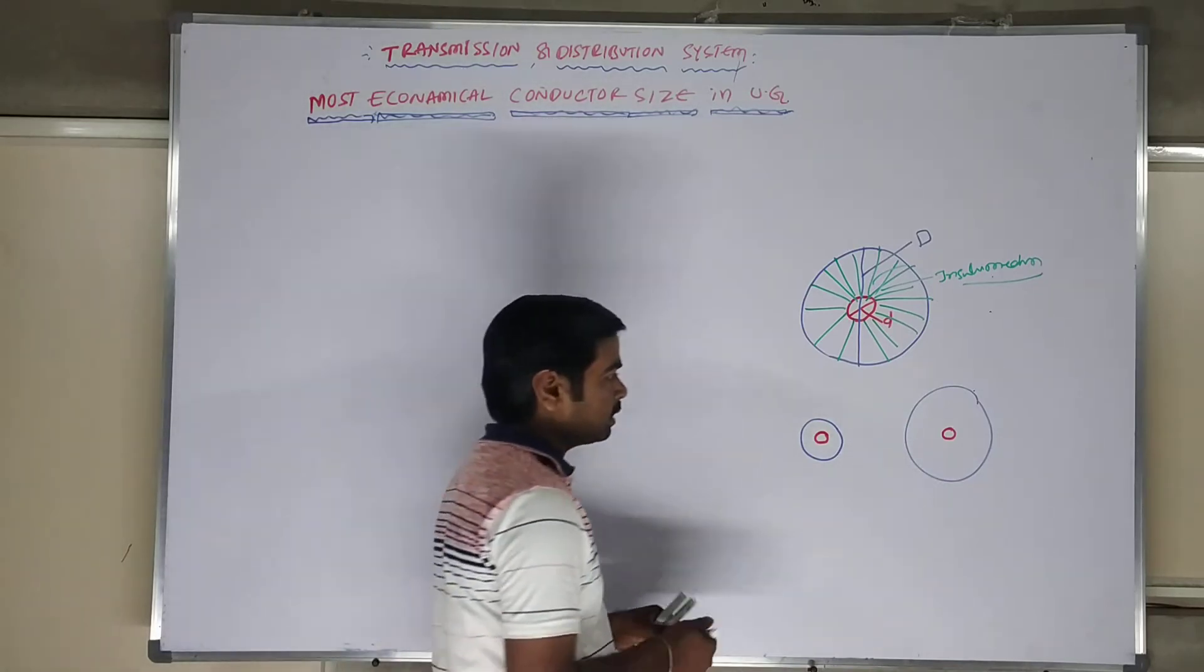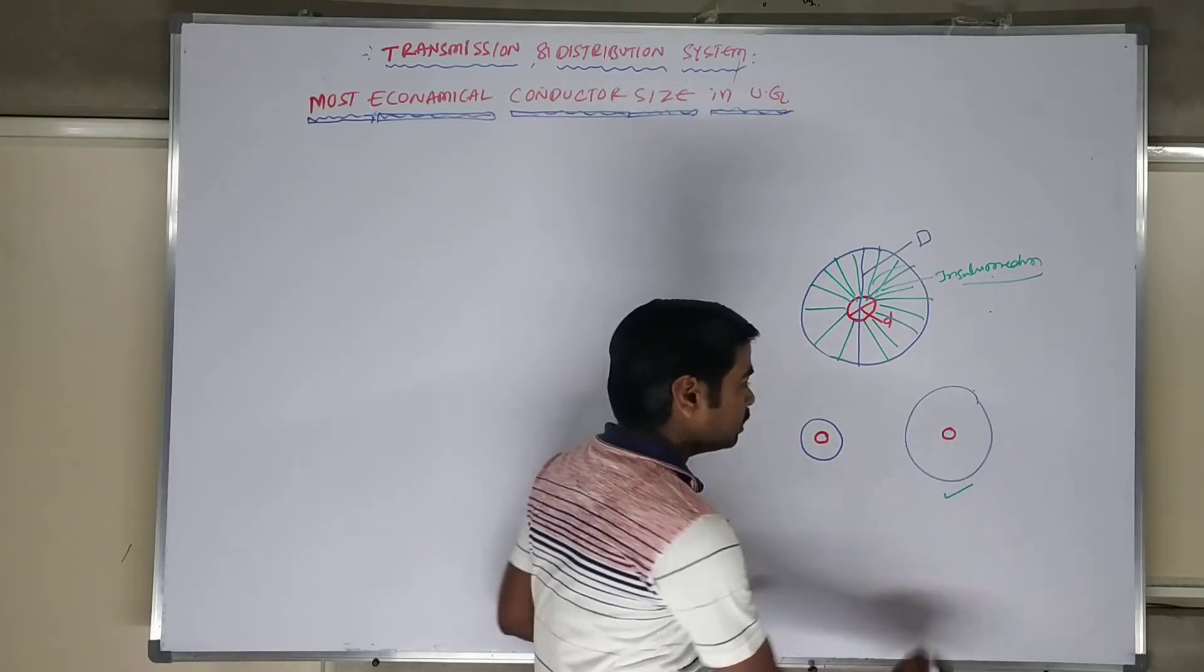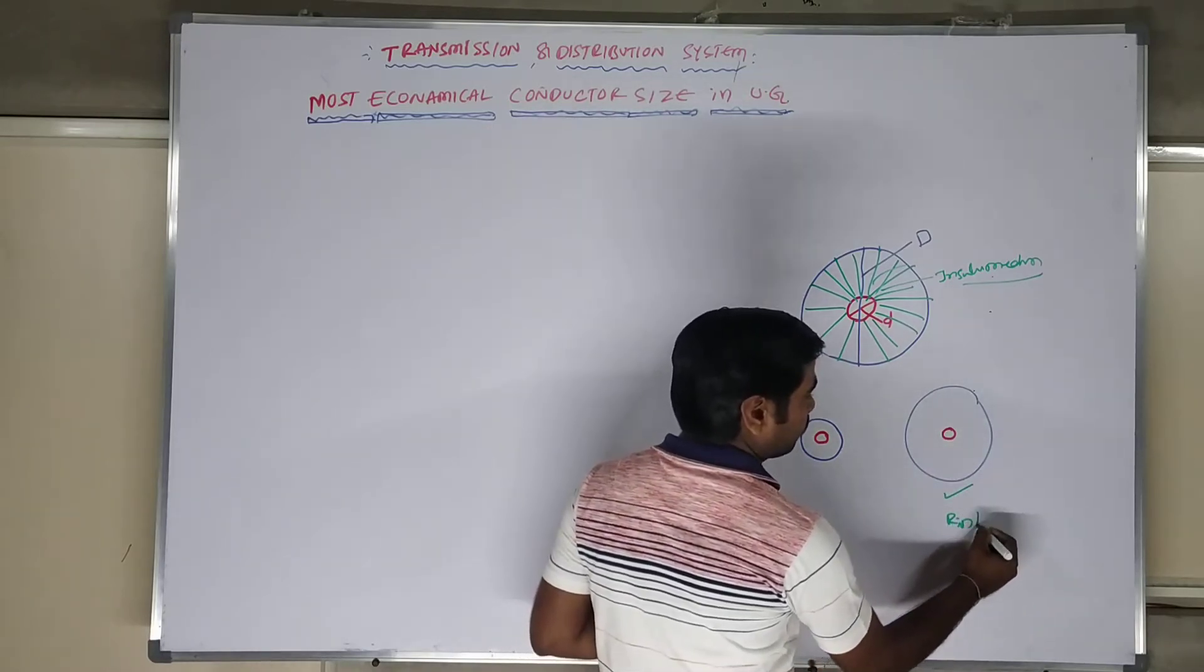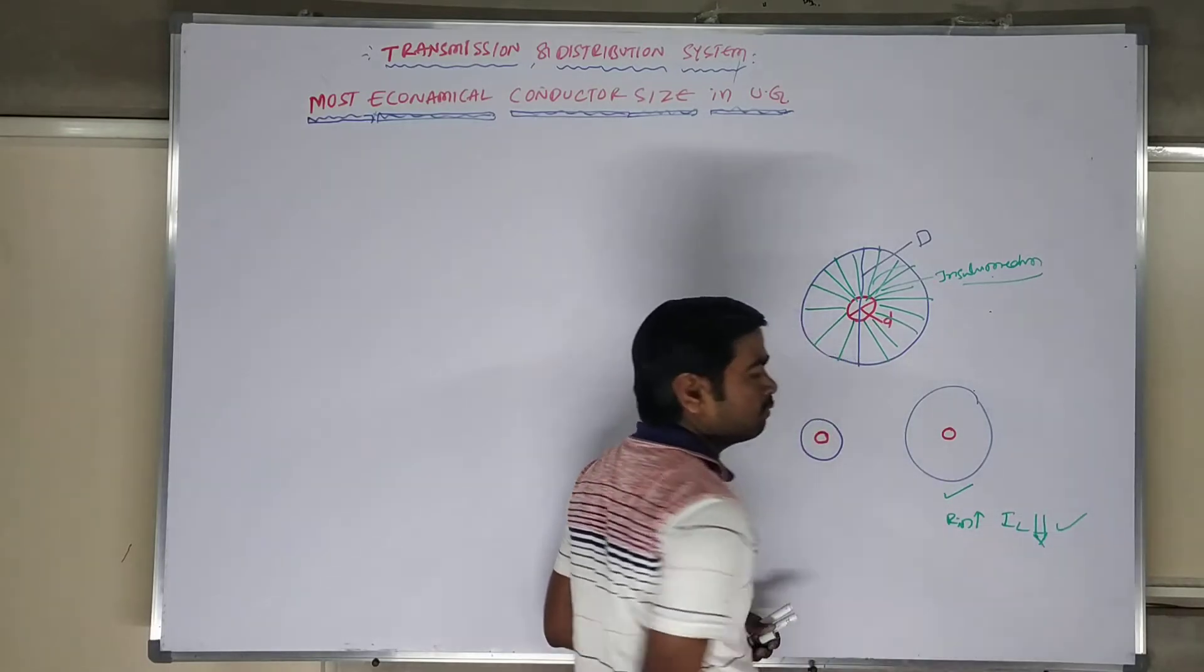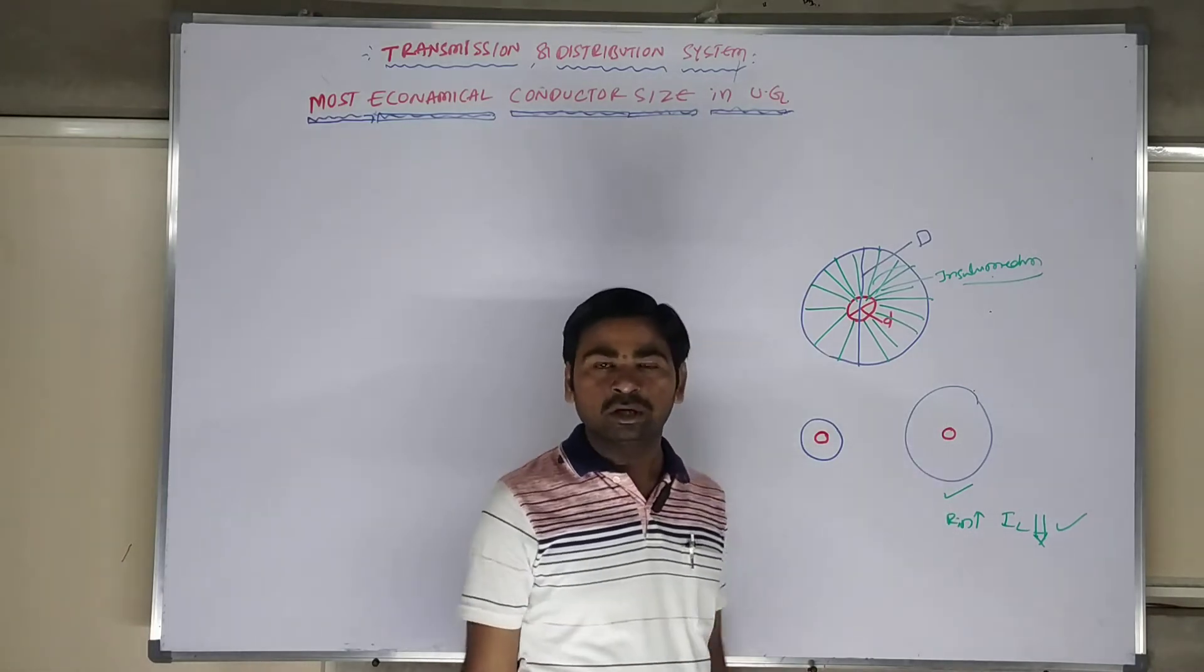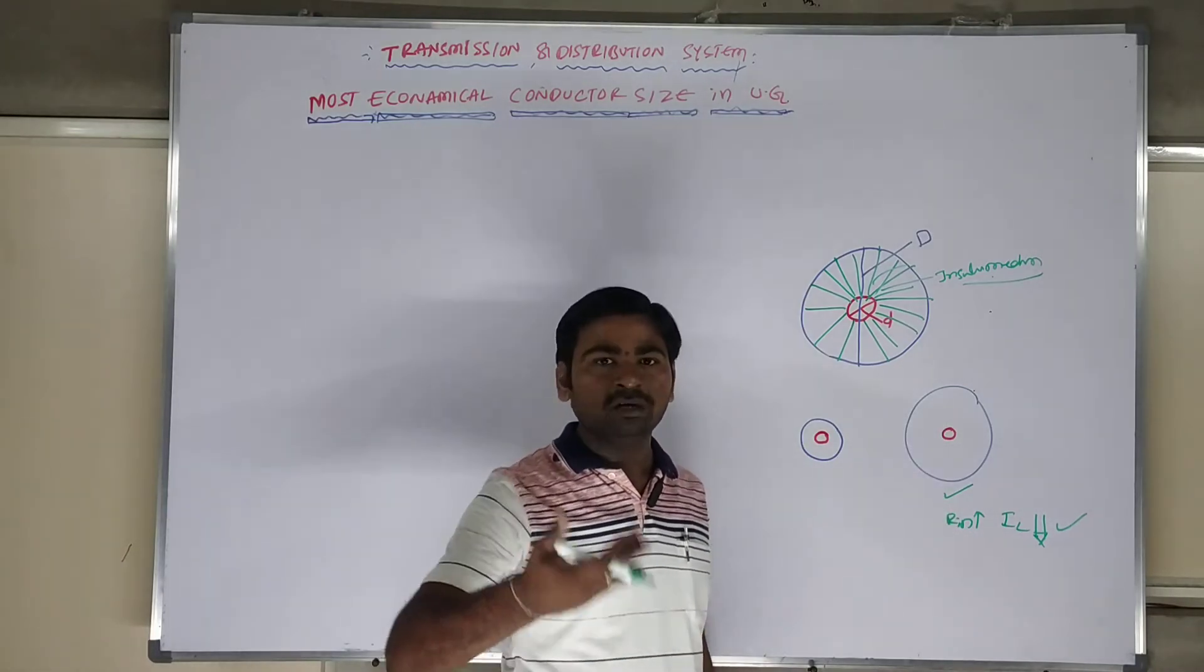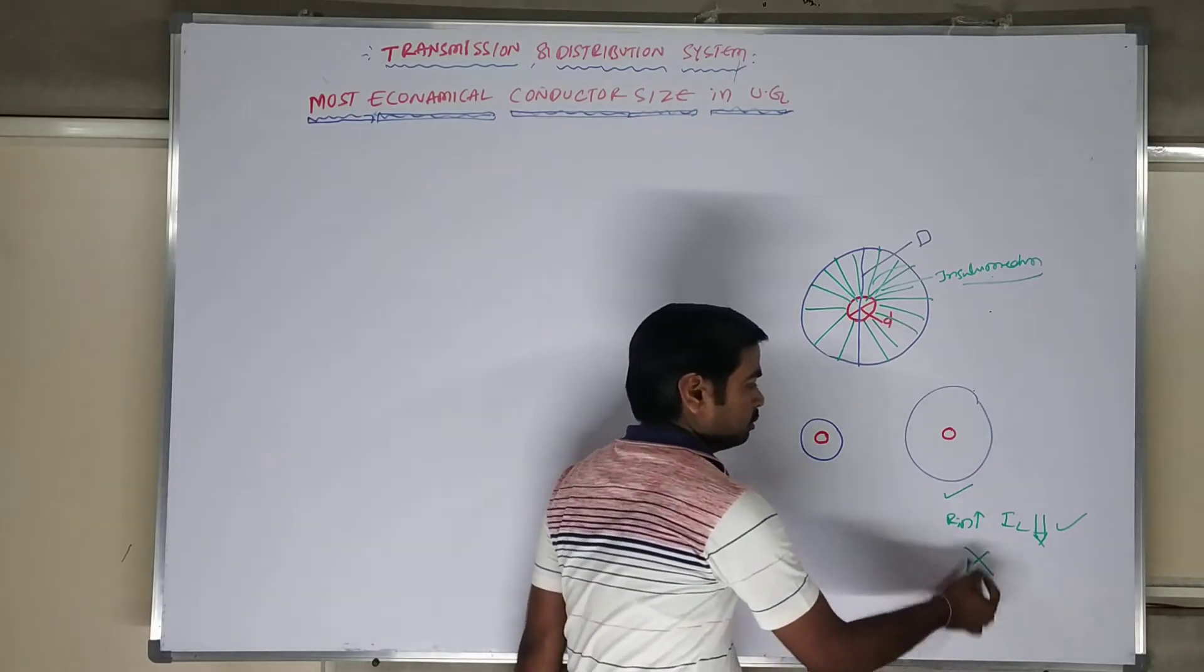If I select this one, the R insulation is going to be increased. Therefore, leakage current IL is going to be decreased. This is very advantageous. But automatically the cost of the insulation is going to be increased. Therefore, the weight of the cable is going to be increased. This is not suggestible.